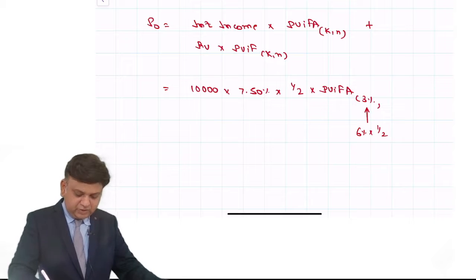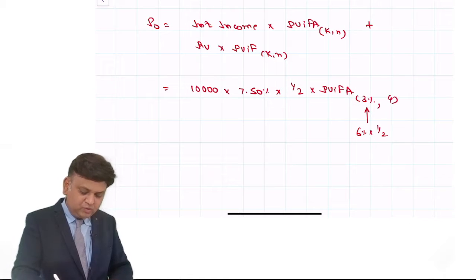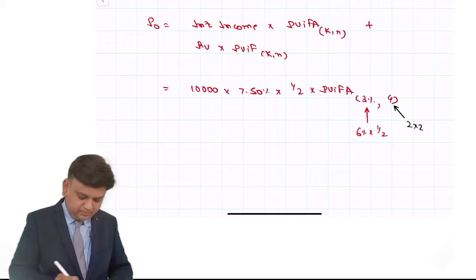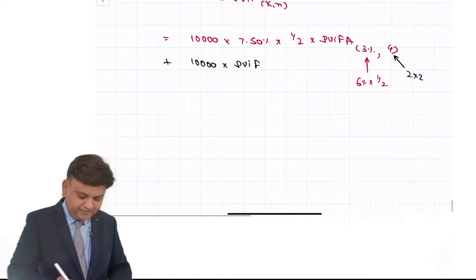From 4th period, I have taken 2 into 2, that is 4, plus redemption value into PVIF at the rate of 3% for 4th period.